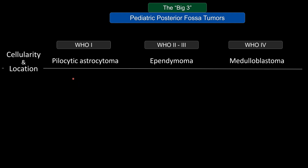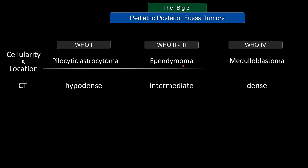You can use cellularity and location to help differentiate between those three. Pilocytic astrocytoma is a hypocellular tumor — low cellularity, a watery tumor — so on CT they tend to look hypodense. Medulloblastoma, on the other hand, has high cellularity and tends to be denser on CT. Ependymoma is somewhere in between. Notably, among those three, ependymoma is the one that likes to calcify, so if you see a pediatric posterior fossa tumor with a lot of calcification, ependymoma is a strong candidate.